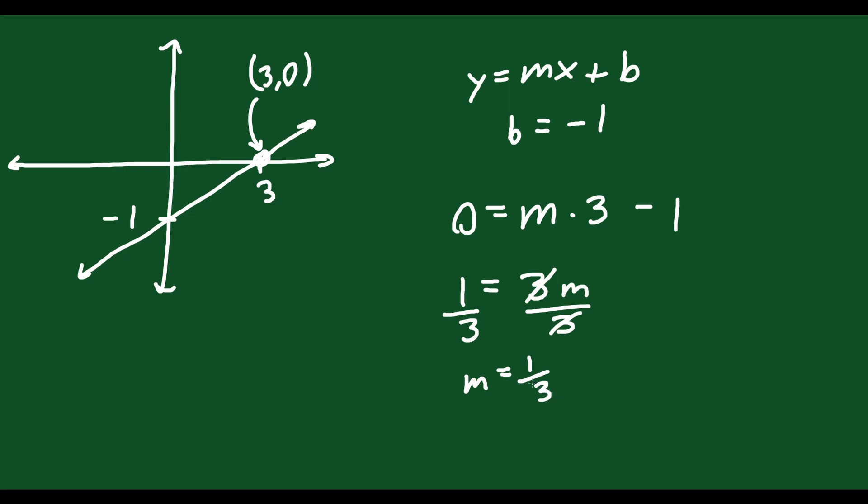So your slope is 1 over 3. So your final answer for the equation will be y equals 1 third x minus 1. Just like that. Now, of course, you could use the other method. You could find the slope between these two points. Say, oh, I went up one unit into the right three units. So rise over run is 1 over 3. You get the same answer. So it's completely up to you how you want to tackle these questions.